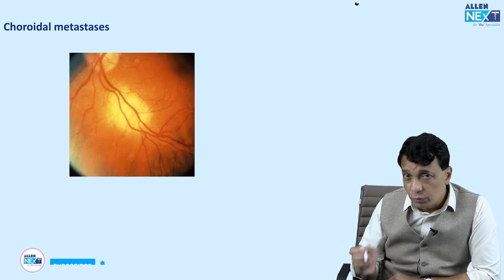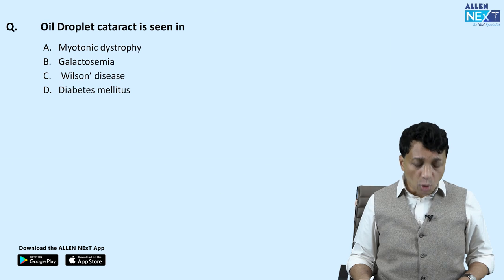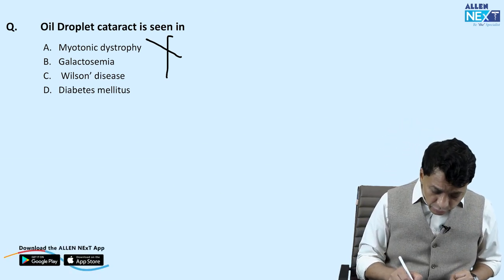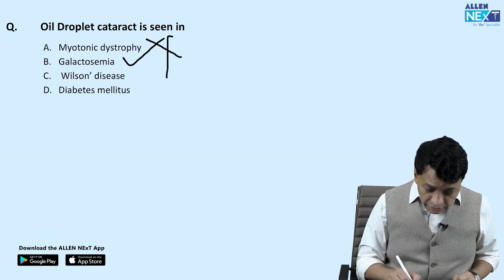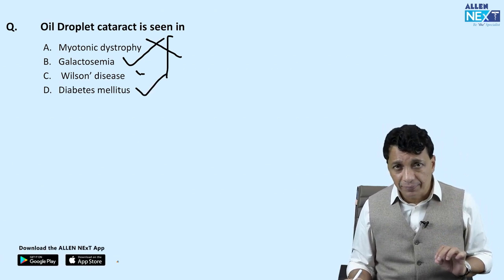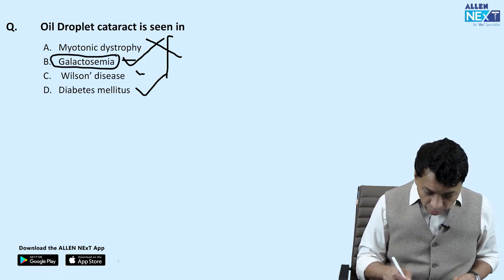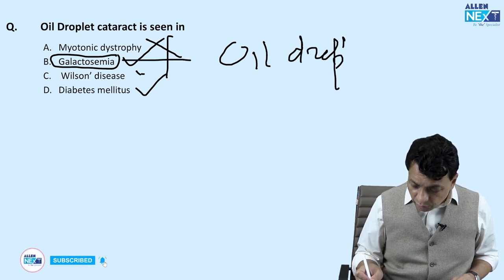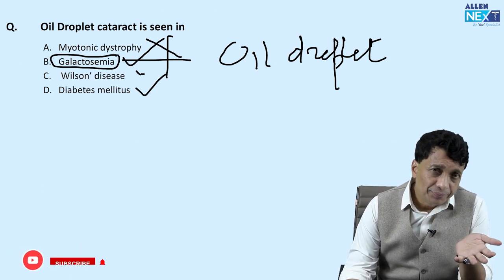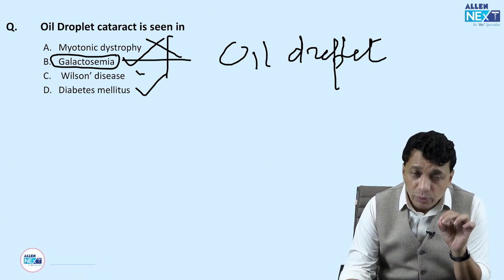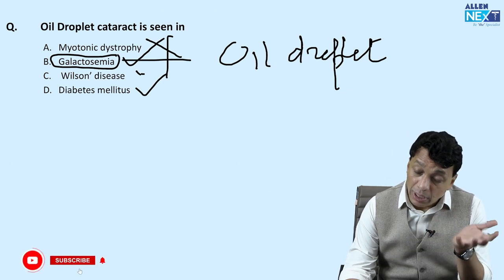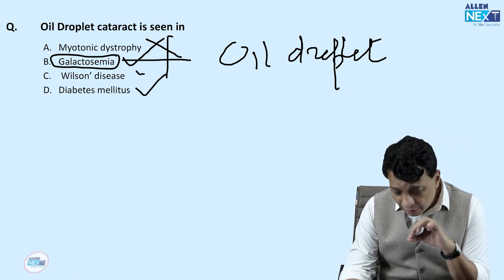Oil droplet cataract is seen in galactosemia. Myotonic dystrophy gives a Christmas tree cataract, Wilson's disease gives a sunflower cataract, and diabetes mellitus gives a snowflake cataract. The question can also be asked as: a newborn with mental retardation and cataracts — think galactosemia, and the answer becomes oil droplet cataract. Galactosemia is number one; Down syndrome and toxoplasmosis are other possibilities.